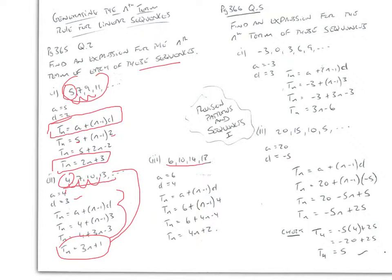The next sequence is 6, 10, 14, 18. The first term a is 6 and the difference between each consecutive term — the constant being added to generate the next term — is 4. We use the formula, plug in 6 for a and 4 for d, and get the nth term rule Tn = 4n + 2 for this linear sequence.